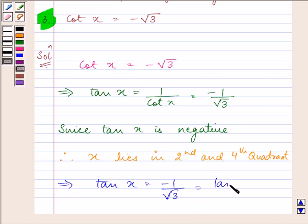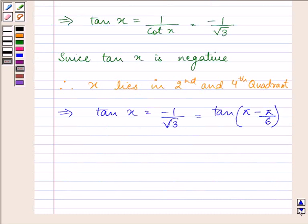The answer comes out to be tan of pi minus pi by 6, because tan of pi by 6 equals 1 by root 3.